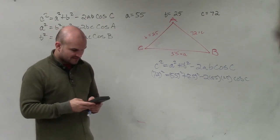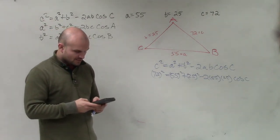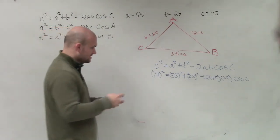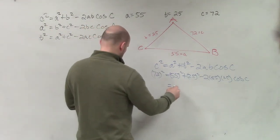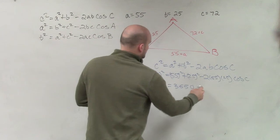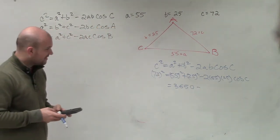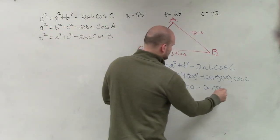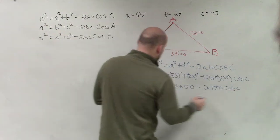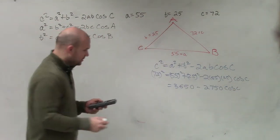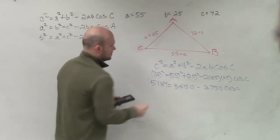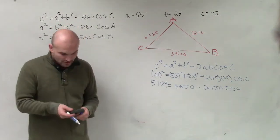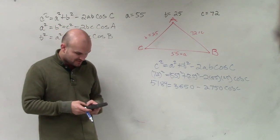So 55 times 55, 3,025, plus 25 times 25, which is 625, so it would be 3,650. And then 2 times 55 times 25 is 2,750 times cosine of C. Does everybody see what I did so far? I just did the basic operations.